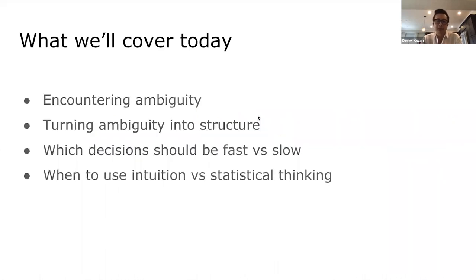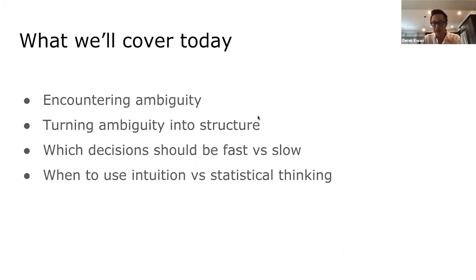What we'll cover today is: first, what are we talking about when we say ambiguity, and when you encounter ambiguity, what does it look like? How are you supposed to deal with it? Then, what is your job as a product manager or leader — turning ambiguity into structure for the rest of your organization. And when handling ambiguity and making decisions, which decisions should be fast versus slow, and when should you apply intuition versus statistical thinking?